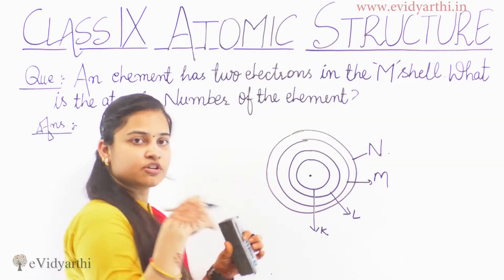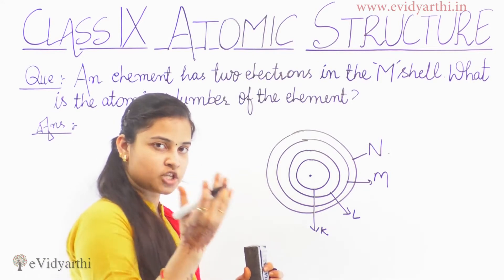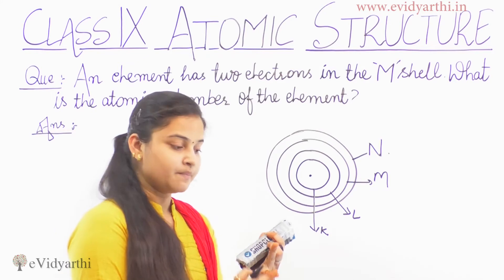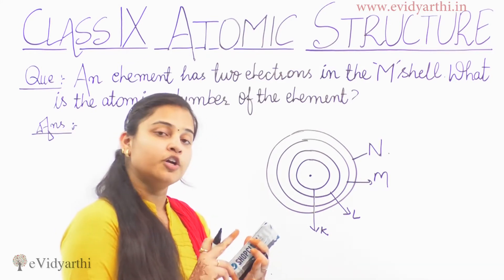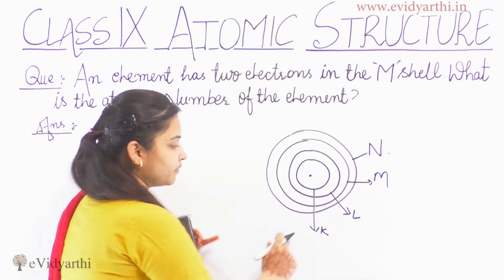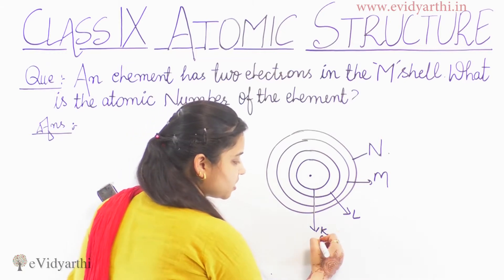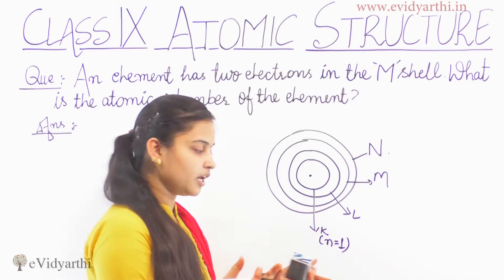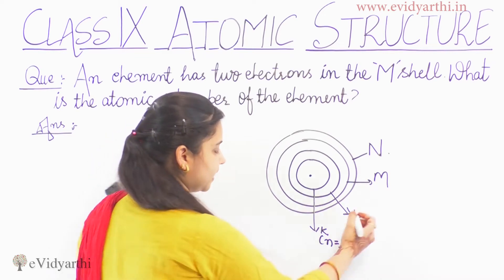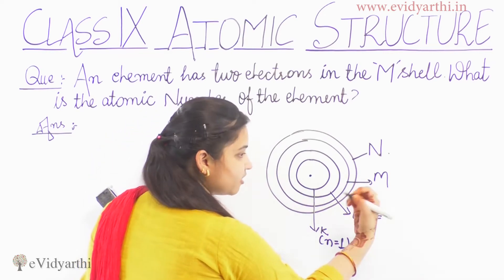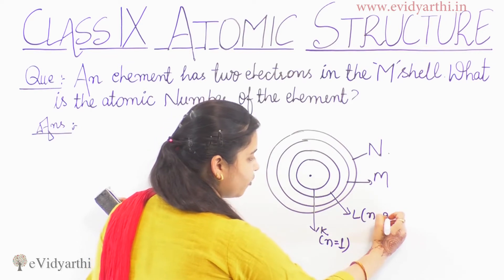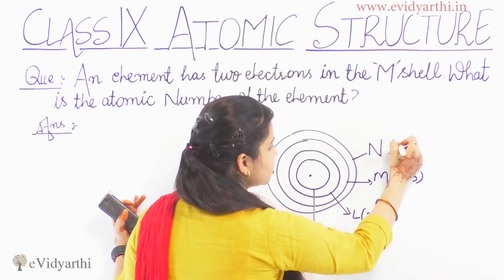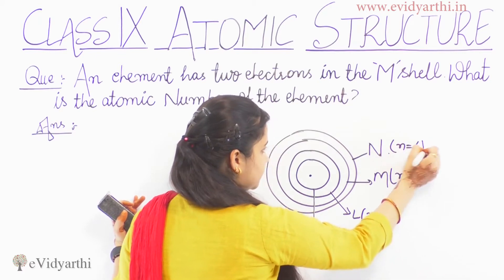So electrons are present in these shells. We can call them orbits, we can call them shells, or we can call them energy levels. The energy level is the value of the shell number. K's shell number is n=1, L's energy number is 2, M's shell number is 3, and N's shell number is 4.